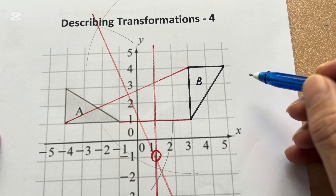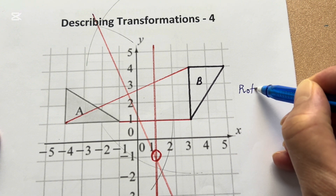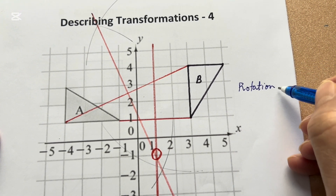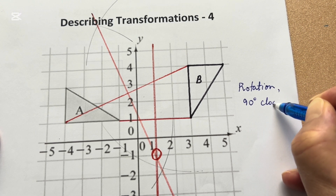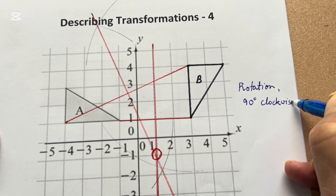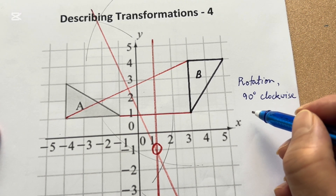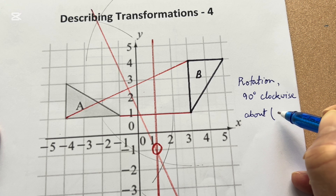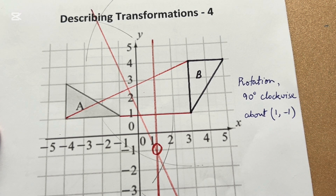To describe this transformation: it is a rotation by 90 degrees clockwise about the point (1, −1). Thank you very much.